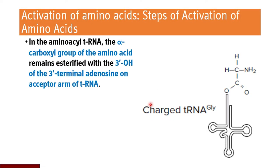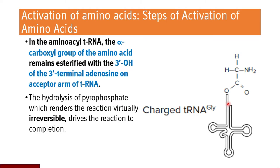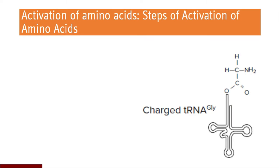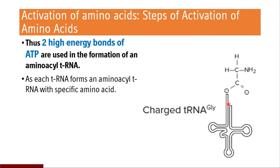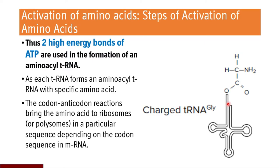In the aminoacyl tRNA, the alpha carboxylic group of the amino acid is going to remain esterified with the 3' OH of the 3' terminal adenosine on the acceptor arm of tRNA. The sequence CCA is present, and the 3' OH of adenosine will accept the carboxylic group of the amino acid. The hydrolysis of pyrophosphate drives the reaction to completion — it is irreversible because two high energy phosphate bonds are used by conversion of ATP to pyrophosphate. The codon and anticodon reactions bring the amino acid to ribosomes in sequence depending on the codon sequence in mRNA.